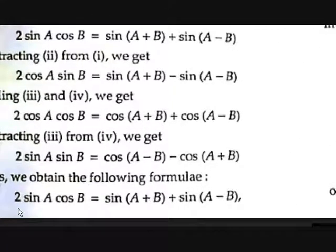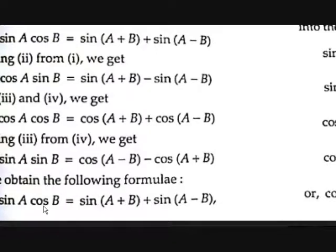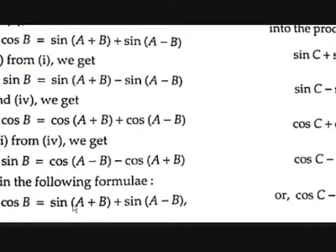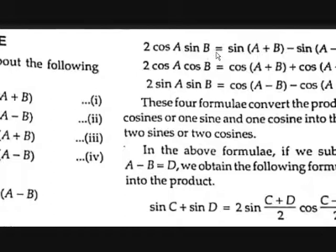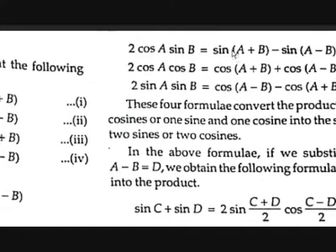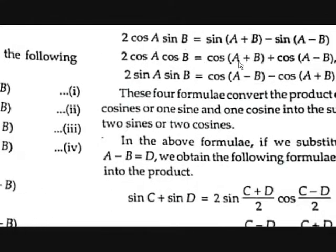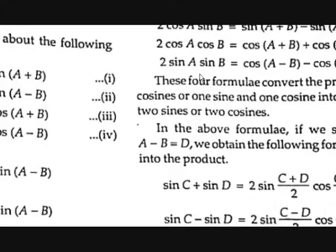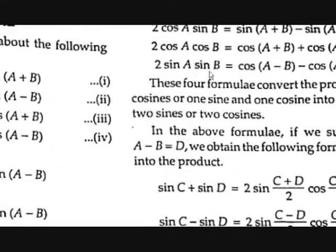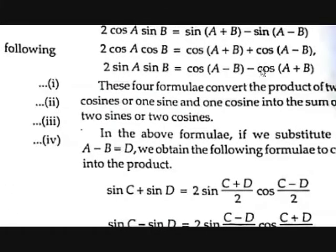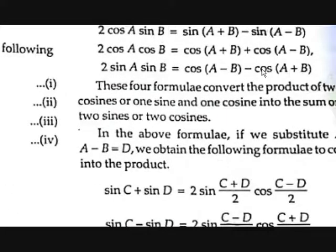Here are the four formulas: 2 sin A cos B = sin(A+B) + sin(A−B); 2 cos A sin B = sin(A+B) − sin(A−B); 2 cos A cos B = cos(A+B) + cos(A−B); and 2 sin A sin B = cos(A−B) − cos(A+B). We got 4 new formulas.